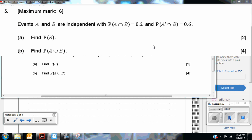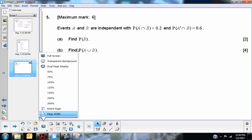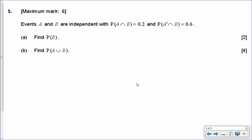In this video, I'm going to go over number 5 from the non-calculator test, paper 1. So here we have events A and B, which are independent, and we are going to need to use that information.